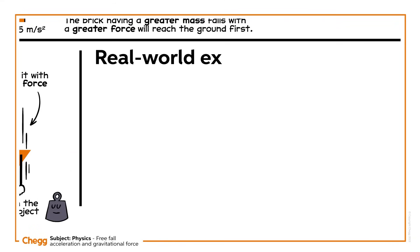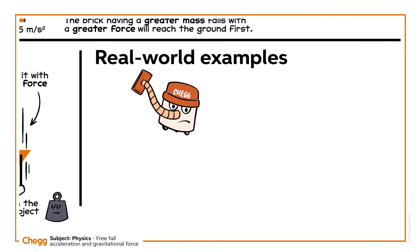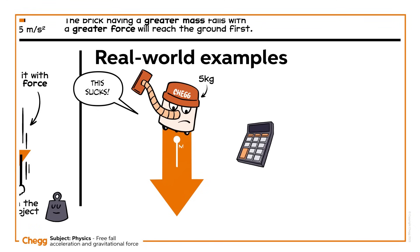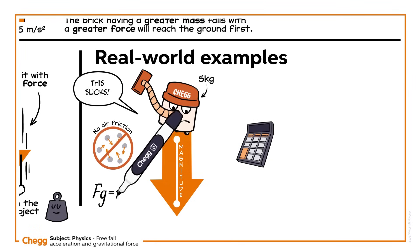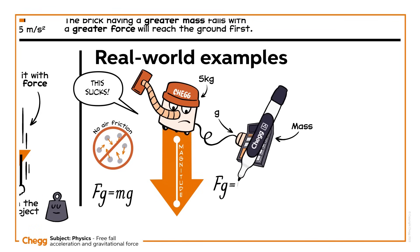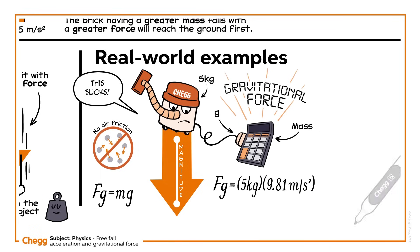Now let's take an example. Suppose an object of mass 5 kg is falling straight towards the ground. Calculate the magnitude of the gravitational force acting on the object, considering there is no air friction. The gravitational force acting on the object is given as Fg equals m times g. We simply plug in the values of mass and g into the expression to calculate the gravitational force. The gravitational force of the object is 49.1 newtons.